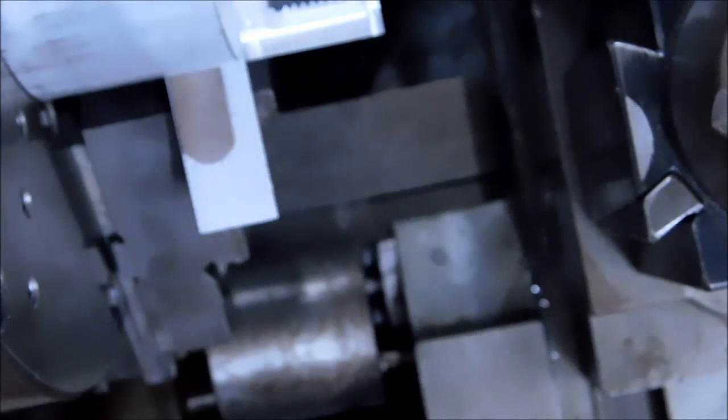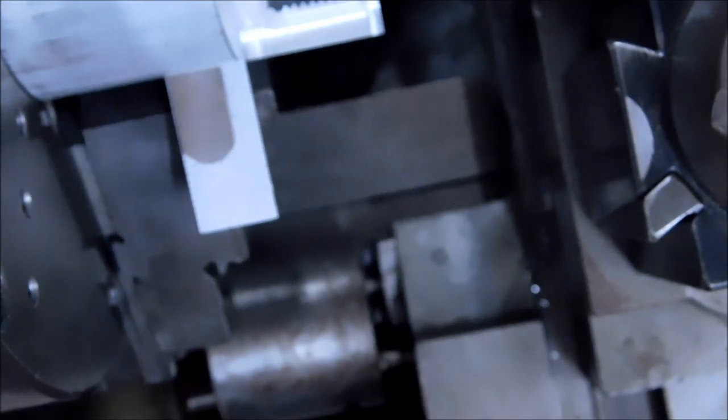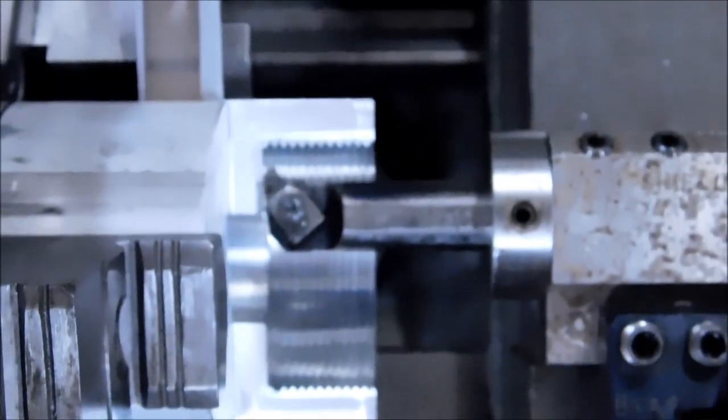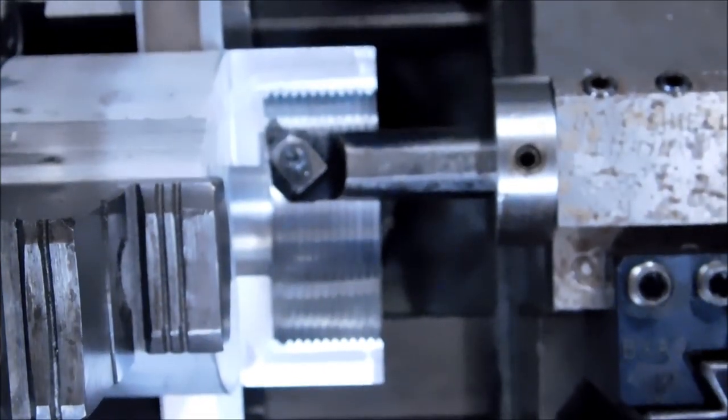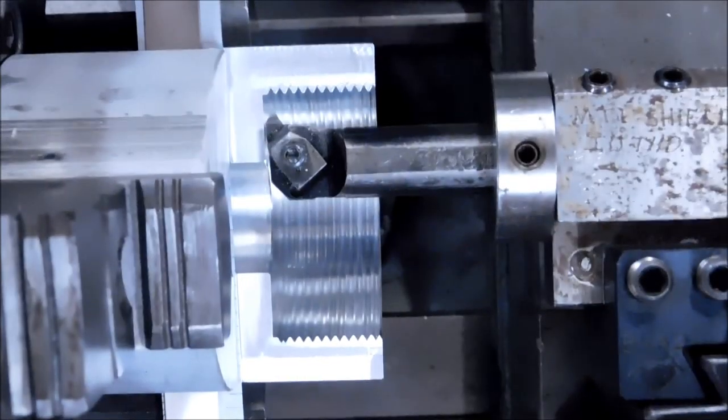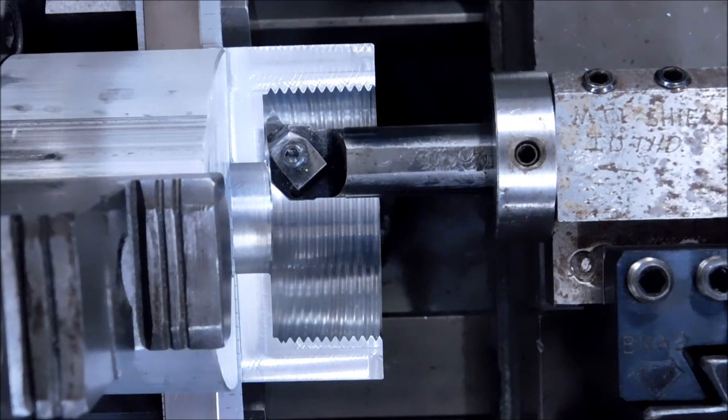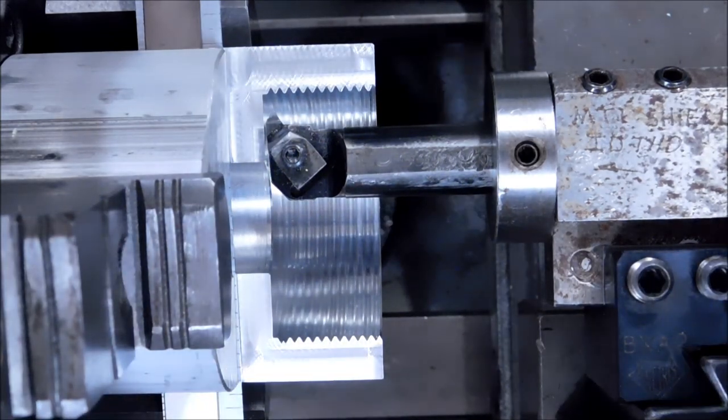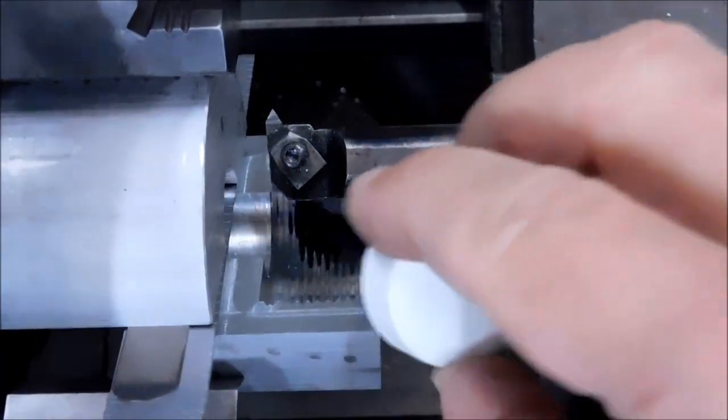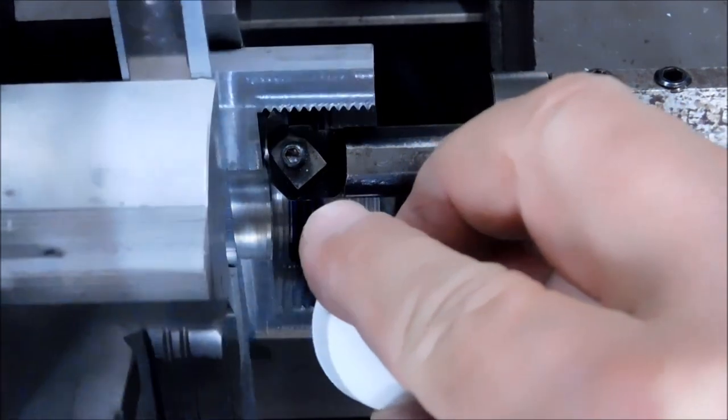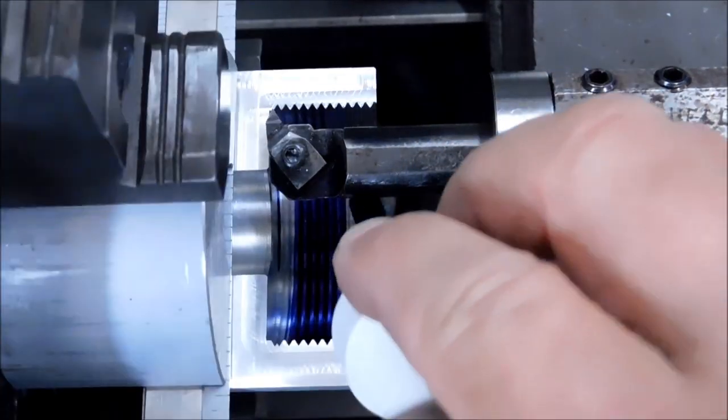And I am going to blue up these threads and take a cut. Now the reason you don't want to blue them up initially is because the bluing can sometimes pull up in the root of the thread and influence that back and forth motion when you're trying to zero out your tool.